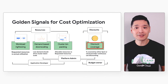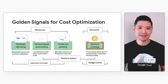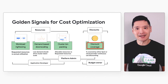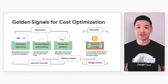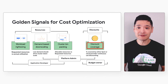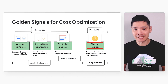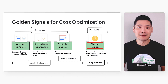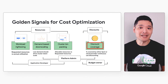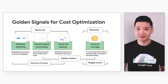The fourth signal is in the discounts section: spot and CUD coverage. This metric measures the percent of resources covered by either spot or preemptible VMs or committed use discounts. Spot VMs can provide up to 91% off from a cost perspective.